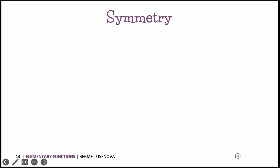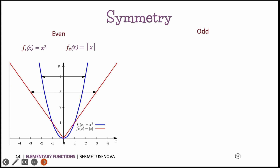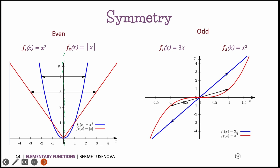The next property is symmetry. Symmetry is the property of an object that allows it to be divided into two identical mirror halves. A symmetric function can be even or odd. Even functions are symmetric about the y-axis — for example, x squared and the absolute value function. If you divide their graphs along the y-axis, the two halves mirror each other. Odd functions, such as 3x or x to the power of 3, are symmetric about the origin. Dividing them gives two halves that mirror each other — this is the graphical difference between even and odd functions.